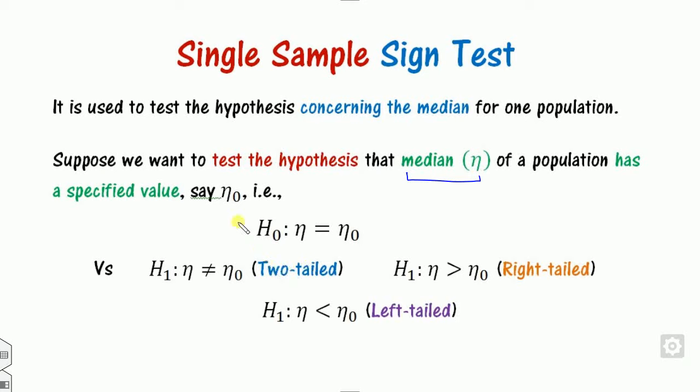The testing of hypothesis checks whether the median η equals some specified value η₀, or not. The null hypothesis H₀ is that the median equals η₀, and the alternative hypothesis H₁ can be either two-tailed or one-tailed, categorized as right or left tail.